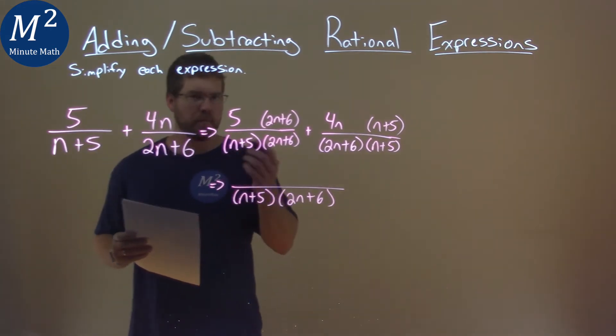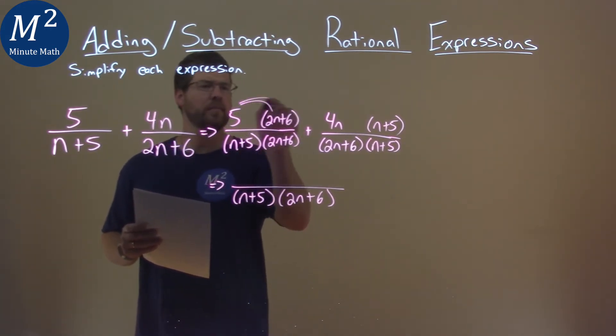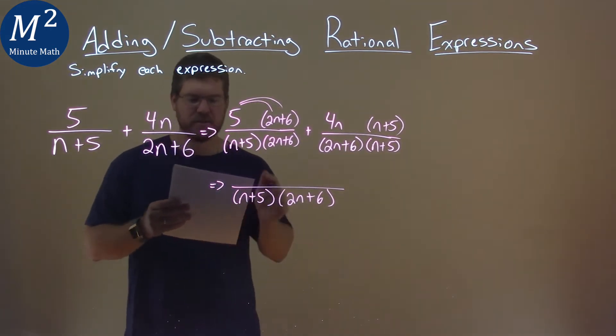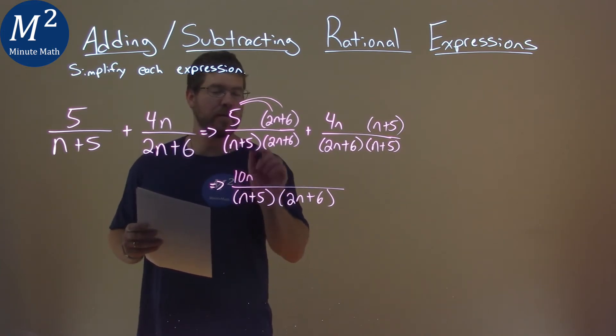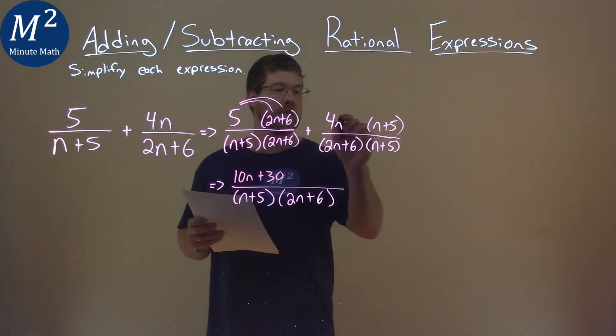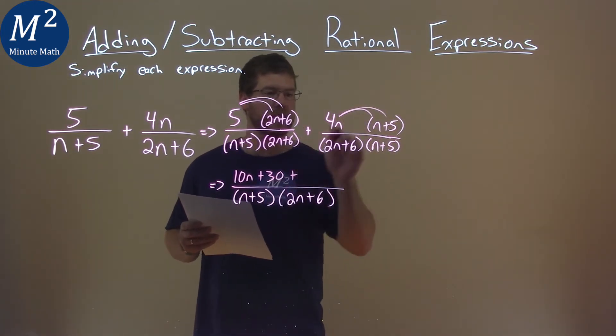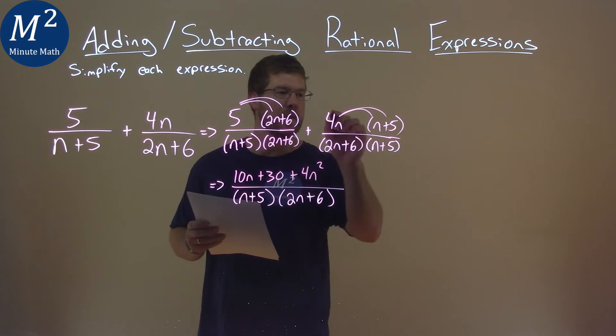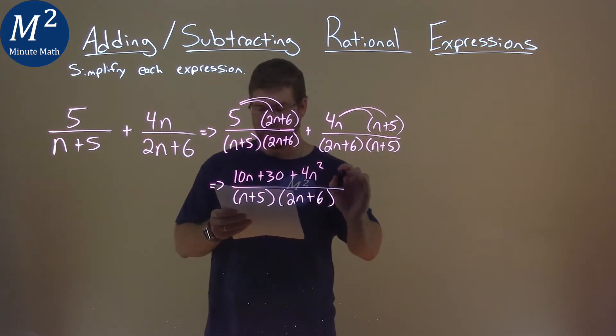The numerator, we can combine this, but also distribute as we go. 5 times 2n is 10n, and 5 times 6 is 30. From there, do the same thing with the 4n. Multiply it out. 4n times n is 4n squared, and 4n times 5 is 20n.